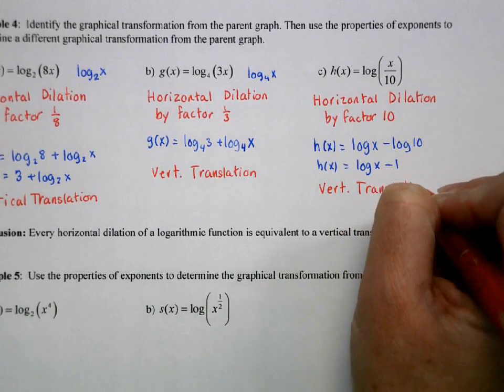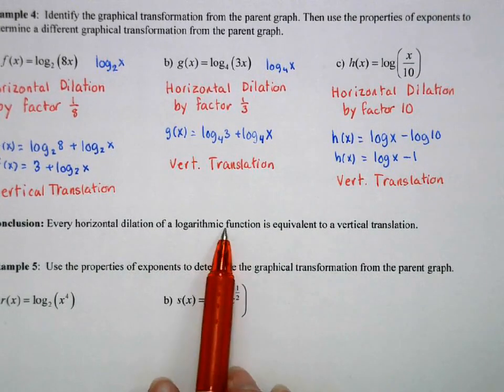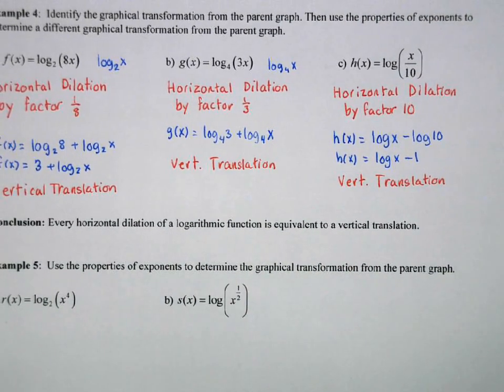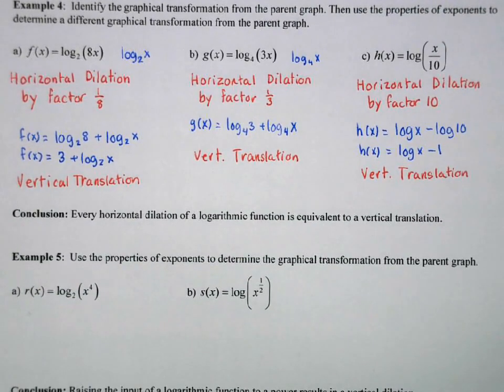So our conclusion. For every horizontal dilation of a logarithmic function there is an equivalent vertical translation. And this is just something that you can get to pretty quickly just using the properties of logarithms.